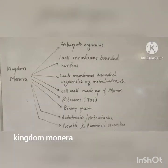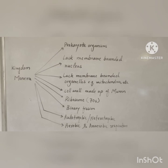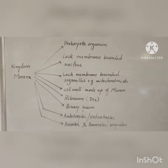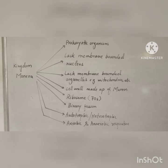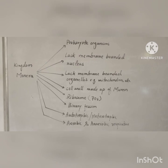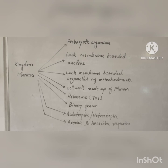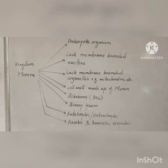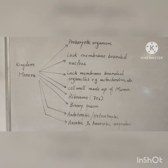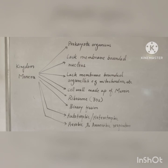The general characteristics of the Five Kingdom System are as follows. Kingdom number one is Kingdom Monera, which consists of all prokaryotic organisms. The term prokaryotic means 'pro' means before and 'karyon' means nucleus — so Kingdom Monera includes all organisms that lack a membrane-bounded nucleus.